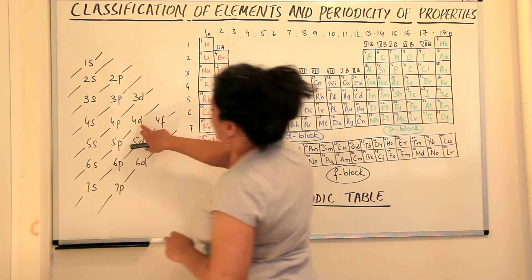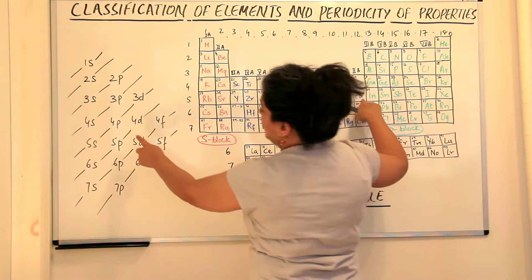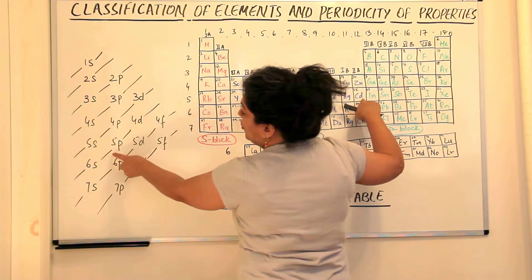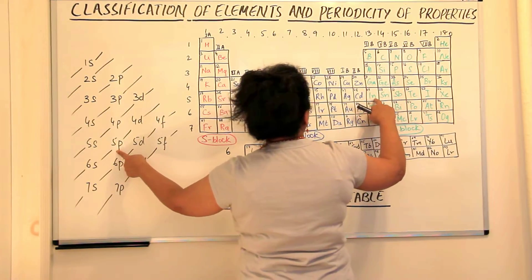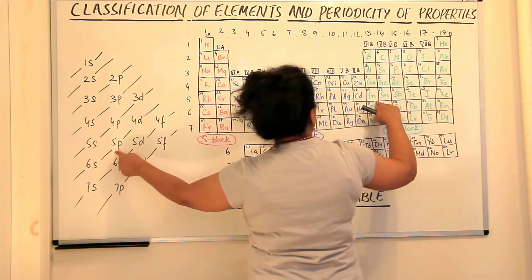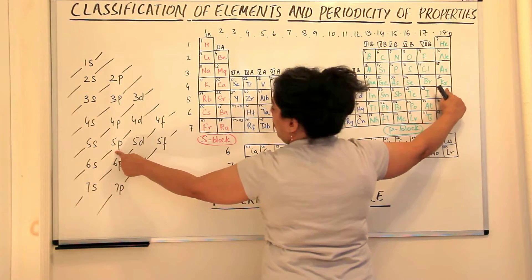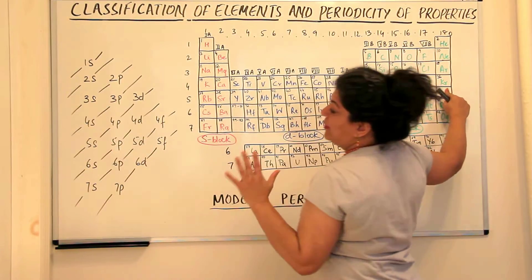So 4d fills up and the 10 electrons go to 4d till cadmium and after cadmium, the next electron goes to 5p and that is indium. So p has 3 orbitals, therefore the 6 electrons would go here and at xenon, the 5p orbitals have been filled up.